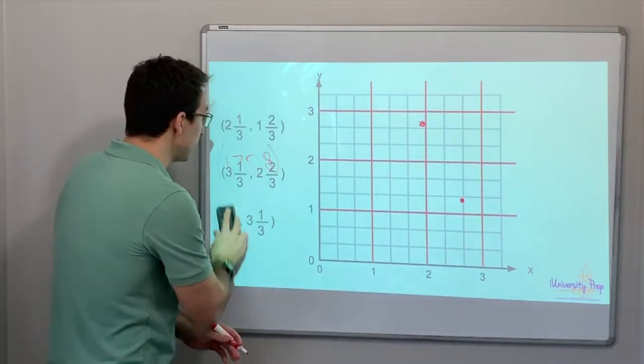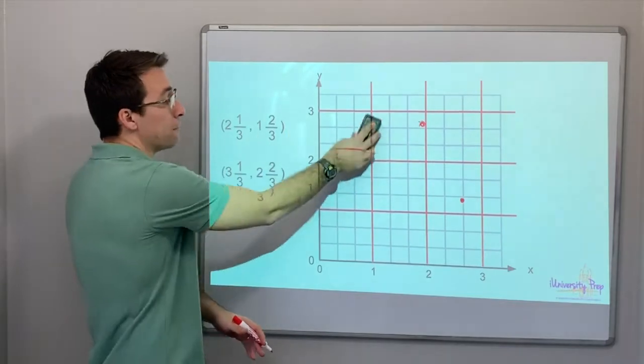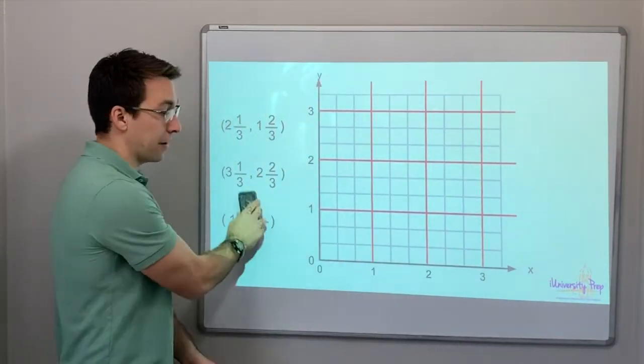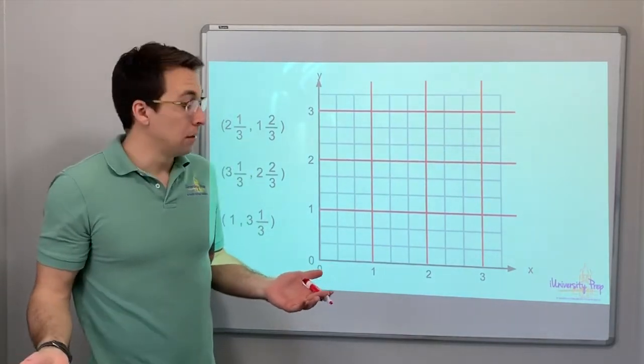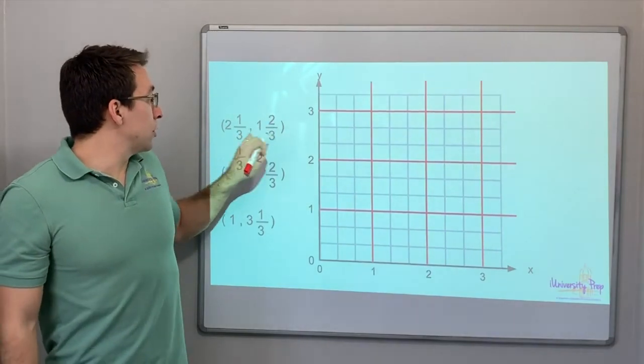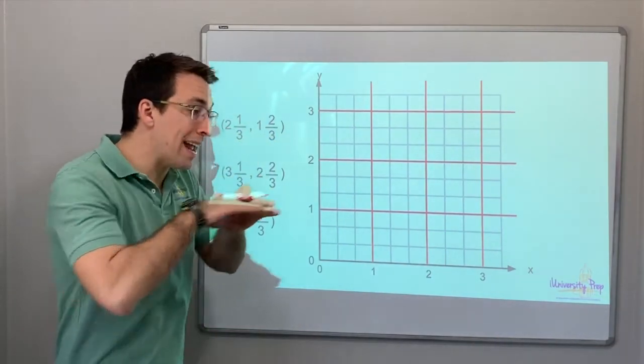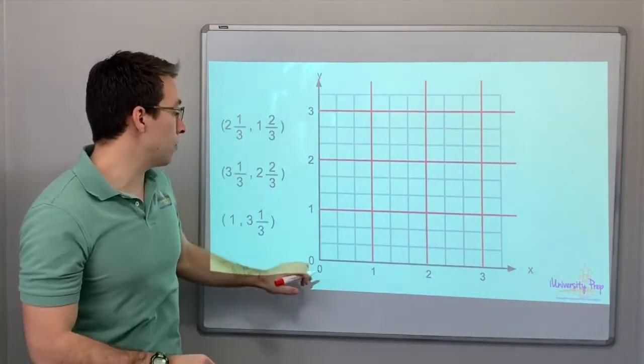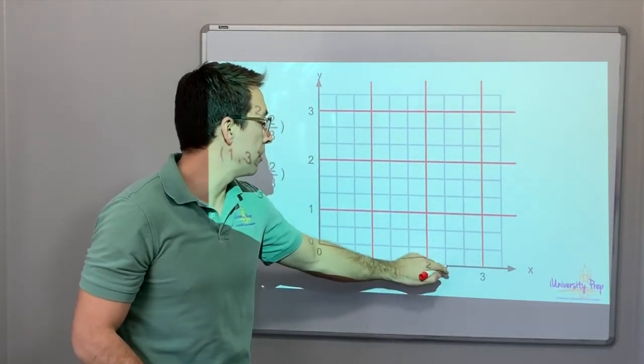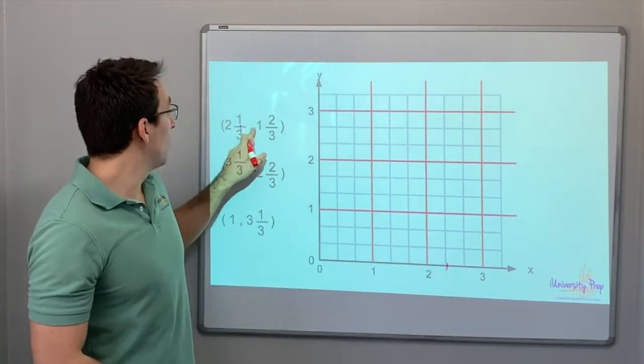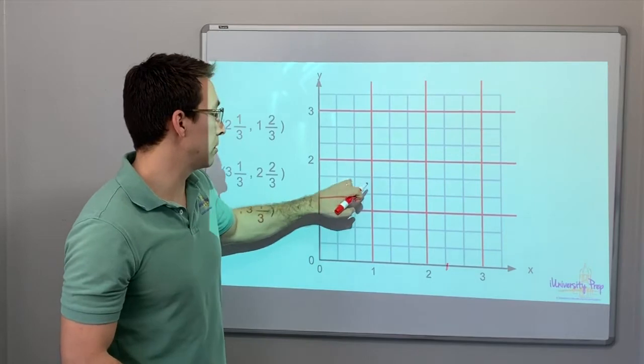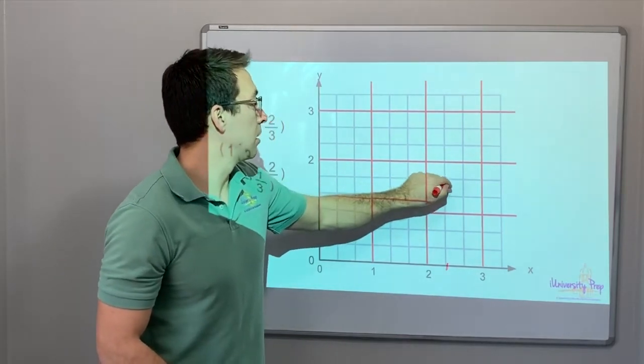All right. So now I'm showing you if we have fractions for both the x value and the y value, what that might look like. 2 and 1 third, 1 and 2 thirds. So let's go x value first, because we go in and then up. So 2 and 1 third. 2 and 1, 2, 3 thirds is 3. So 2 and 1 third. Here we are. 1 and 2 thirds.